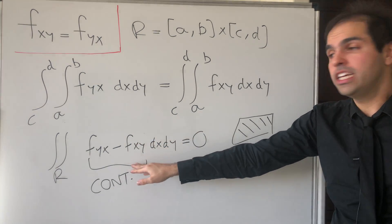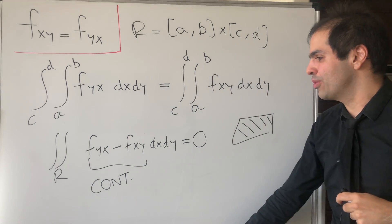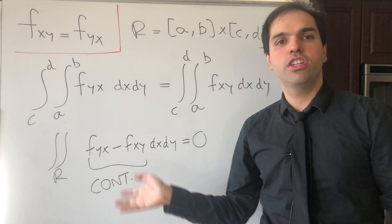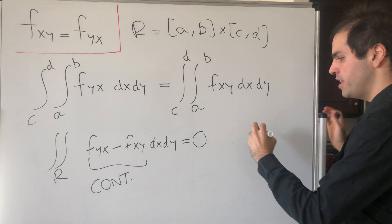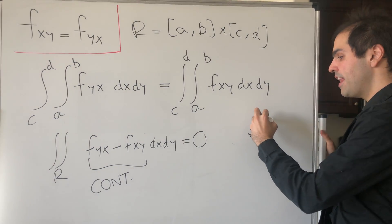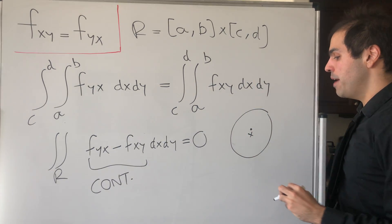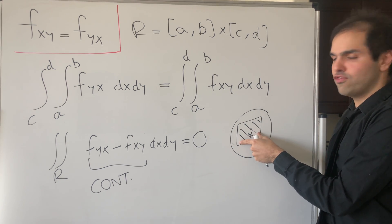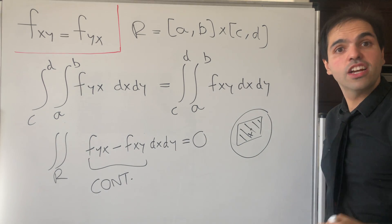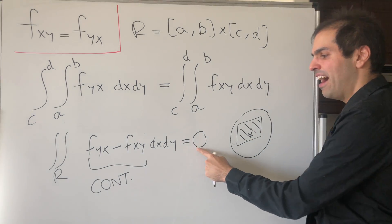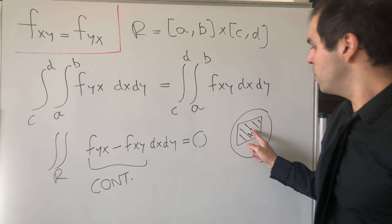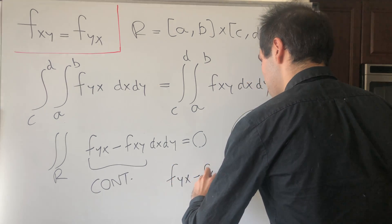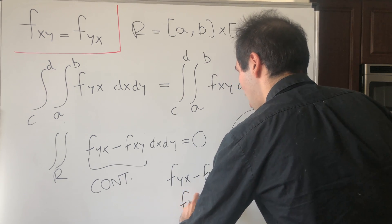Usually if those are not continuous we cannot conclude anything, but here because it's continuous, we can conclude something very important. You have this continuous function, and I'm telling you that no matter which rectangle you integrate it on, the answer is zero. What you conclude is that the inside function has to be identically equal to zero. Suppose not — suppose it's not zero at some point. Without loss of generality, assume it's positive at that point. Then because it's continuous and positive at that point, it has to be positive on a little ball of radius epsilon. But then you can always fit a small rectangle inside that ball, so the integral over that rectangle would be positive, contradicting the fact that the integral is zero. So this function has to be identically zero, meaning those two functions are the same.